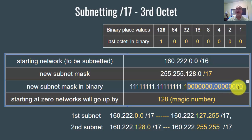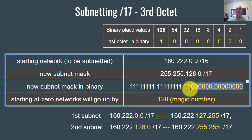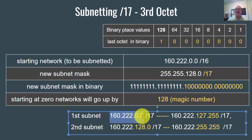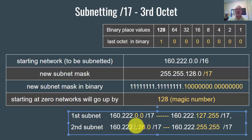The only difference is instead of seven bits worth of hosts, we have 15 bits — that's 2 to the 15th power, roughly 32,000 hosts. The magic number is still 128, but now it's in the third octet. So you have the first subnet: 160.222.0.0 slash 17, and the second subnet: 160.222.128.0 slash 17. That's a zero subnet and a 128 subnet.